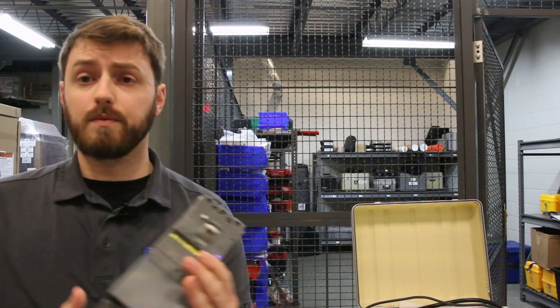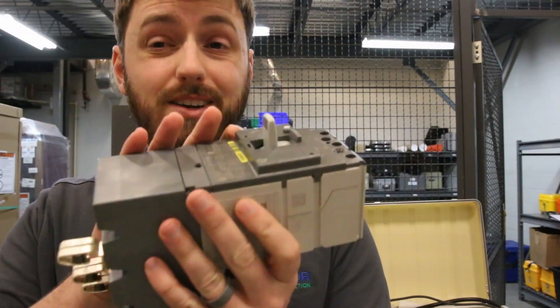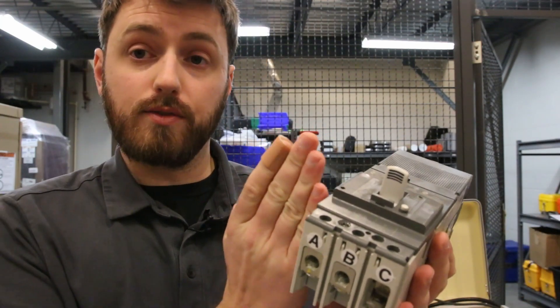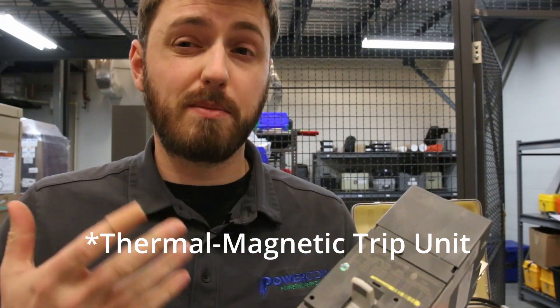It tripped because it got too hot because the factory installed lug wasn't very tight. That is amazing. So we just proved that this breaker, given enough time and just the right conditions, will trip at about 30 amps. A 50 amp breaker will trip at about 30 amps.